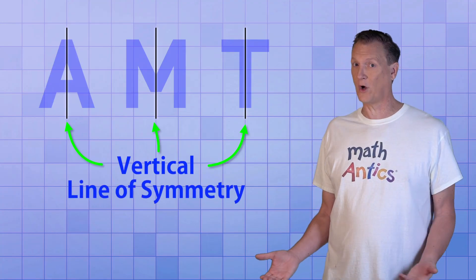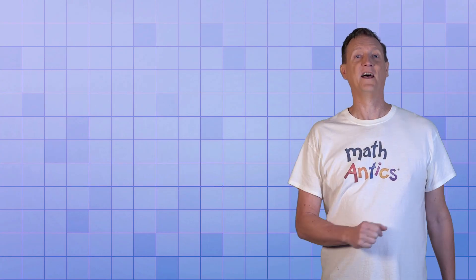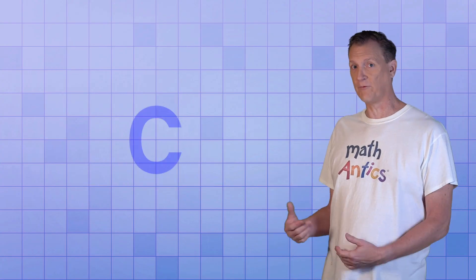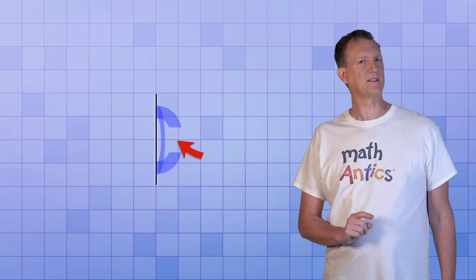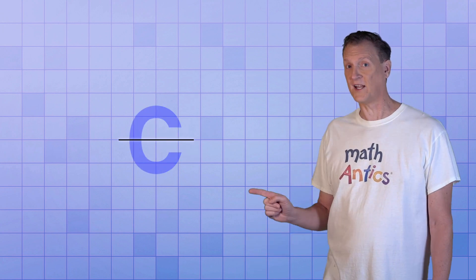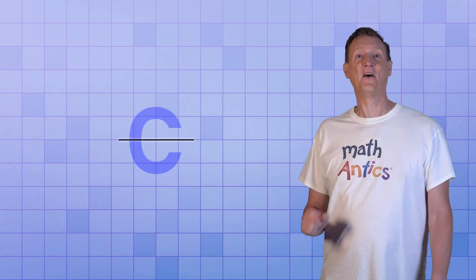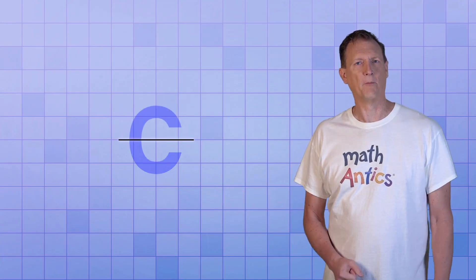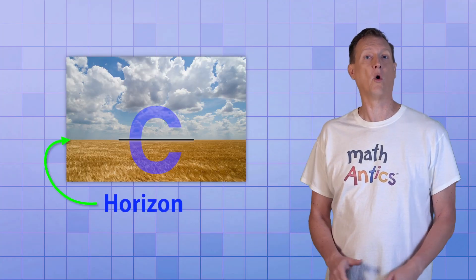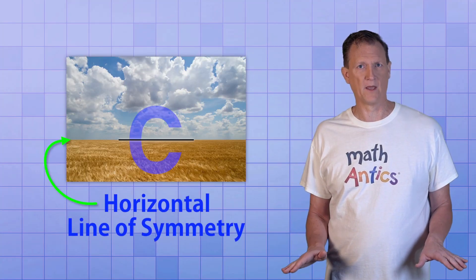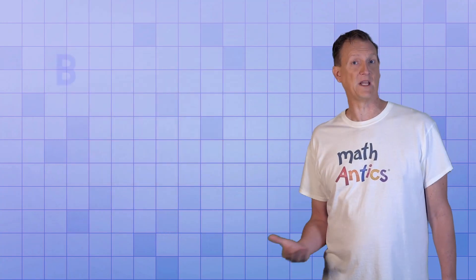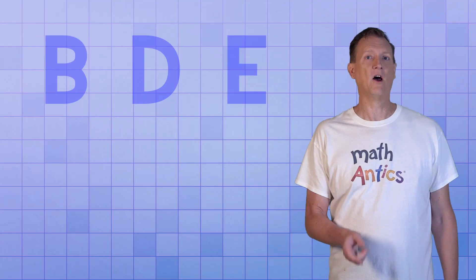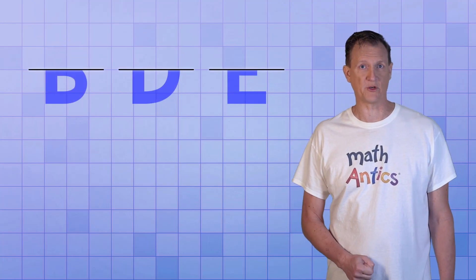Are lines of symmetry always vertical? Nope. Check out the letter C. If we fold it along a vertical line, the two halves don't match. But if we fold it along this horizontal line, the letter C is symmetrical — its line of symmetry is flat like the horizon, so it's called a horizontal line of symmetry. B, D, and E all have horizontal lines of symmetry.